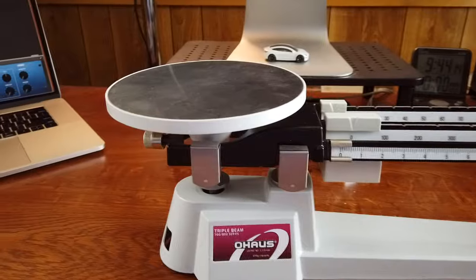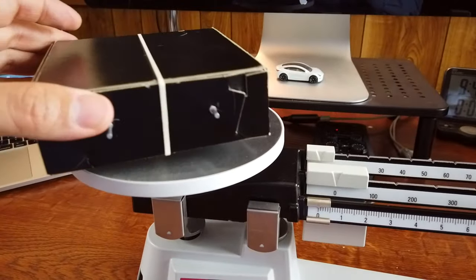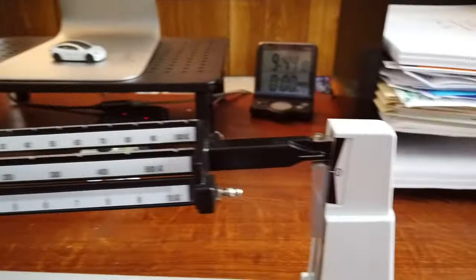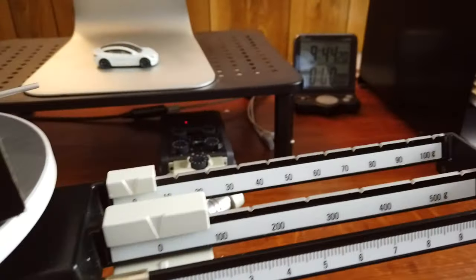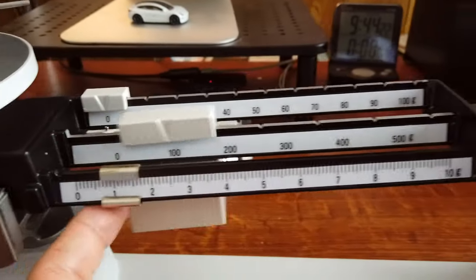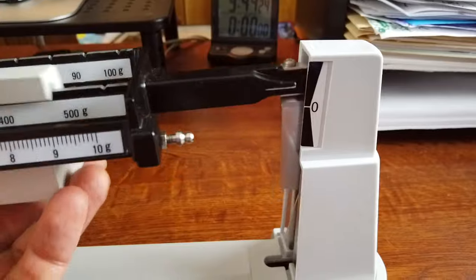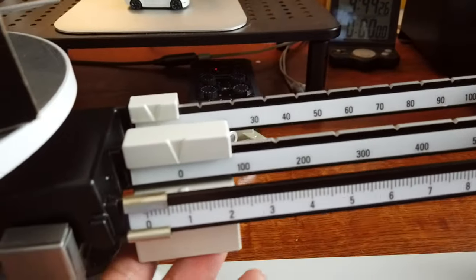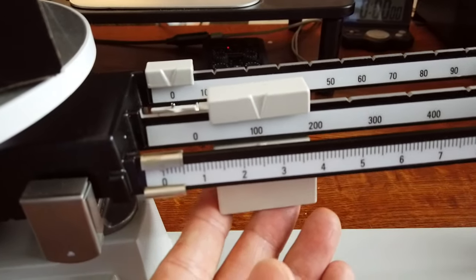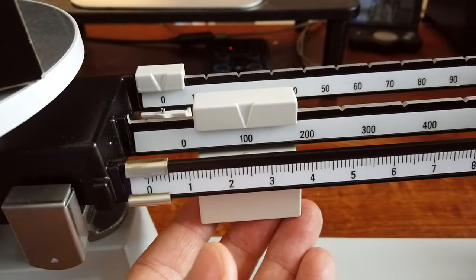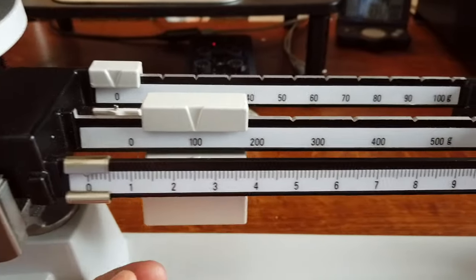Perfect. Now we'll add our black box to the pan, which makes that go up. And then we need to adjust the riders, which will pull it back down. Now we're going to adjust them one at a time, starting with the largest. So we'll use the 100 gram rider and set it in 100 position.